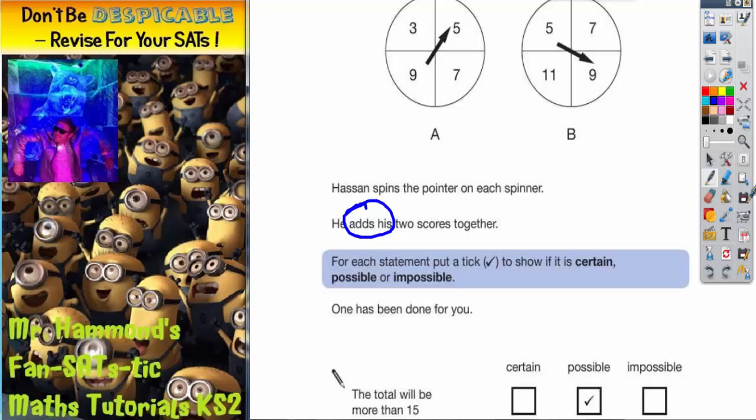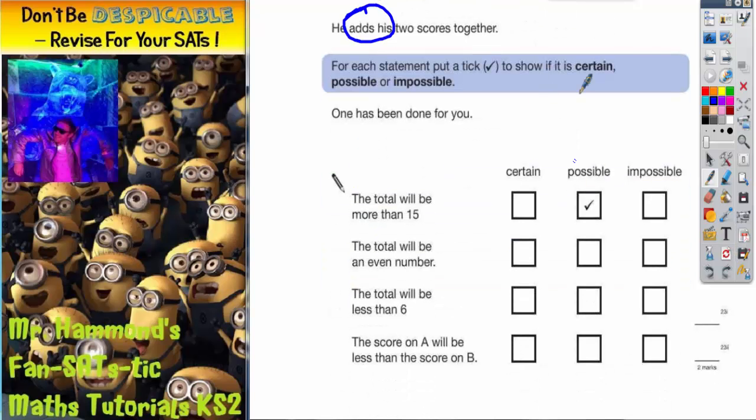For each statement put a tick to show if it is certain, in other words it will definitely happen, if it is possible, if it might happen or might not happen, or impossible means definitely won't happen. One has been done for you.